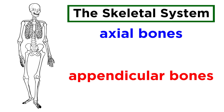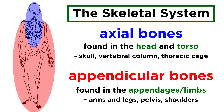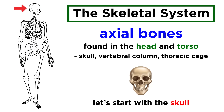As we recall, there are two sections to the human skeleton: the axial skeleton, made of the skull, vertebral column, and thoracic cage, and the appendicular skeleton, made more or less of just the limbs. Let's go through the axial skeleton first, starting at the top with the skull.